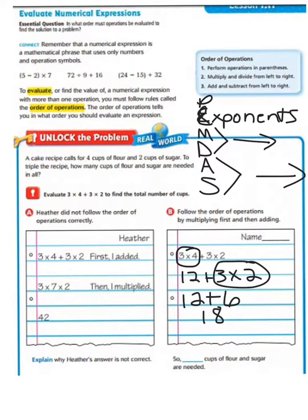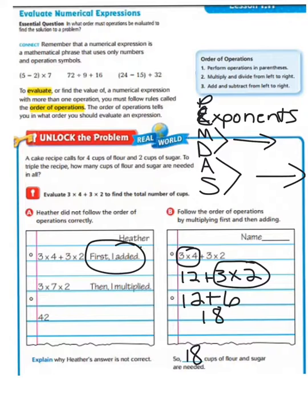So 18 cups of flour and sugar are needed. To explain why Heather didn't get the problem right: she added first. However, according to the order of operations, addition and subtraction come after multiplication and division.